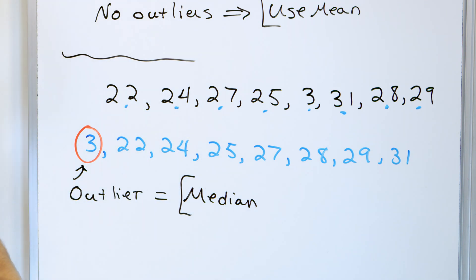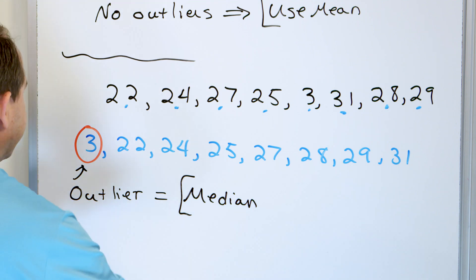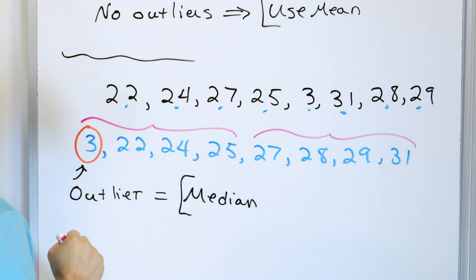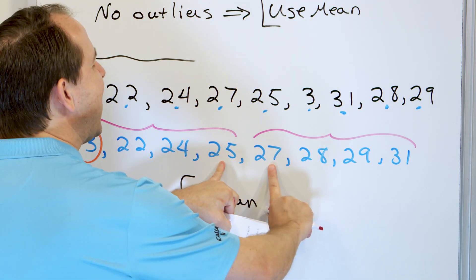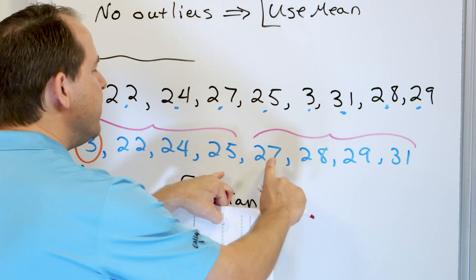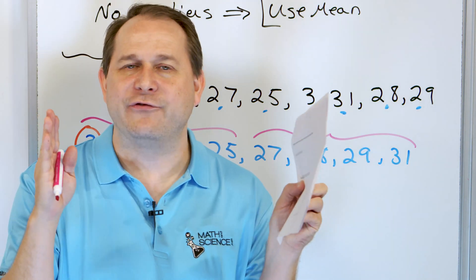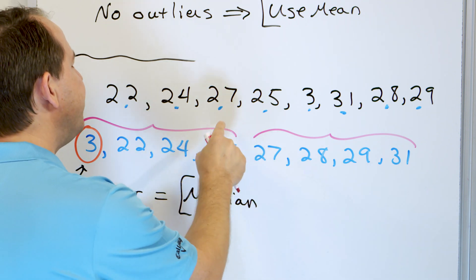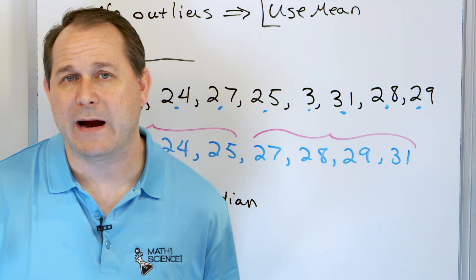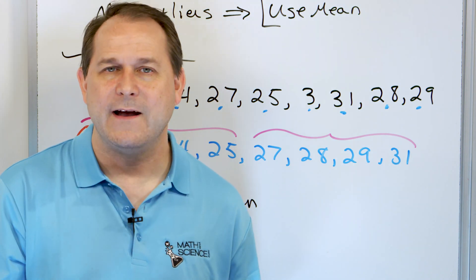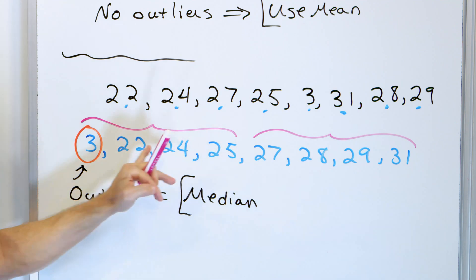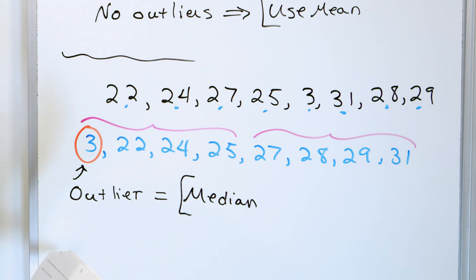Because of the outlier, we want to use the median. How many data points do we have? Eight — an even number. So the first four data points are on one side and the next four are on the other. The two numbers in the center are 25 and 27, and you average them: 25 plus 27 divided by two gives you 26. So the median is 26 years old for the age of getting married. That makes a lot more sense as the center value than the mean would, because the three would pull it down and wouldn't represent what we know to be true in our data.